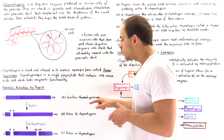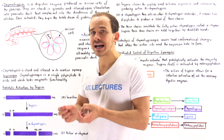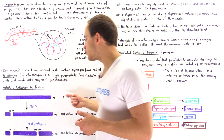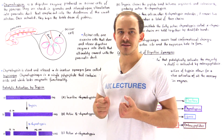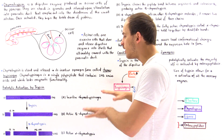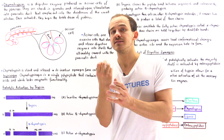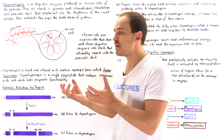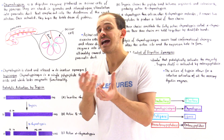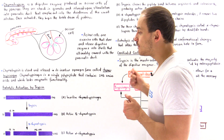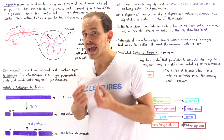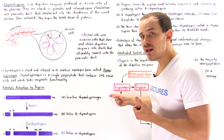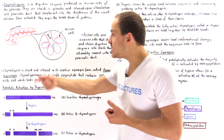In part A, we have the inactive zymogen chymotrypsinogen, consisting of 245 individual amino acids. This molecule is not functional because its active site does not have the correct orientation, and the oxyanion hole used to stabilize the tetrahedral intermediate is not formed. Trypsin, in its active form, must cleave a single peptide bond in this inactive chymotrypsinogen.